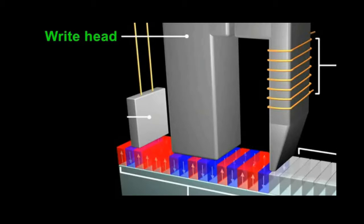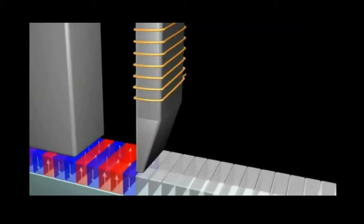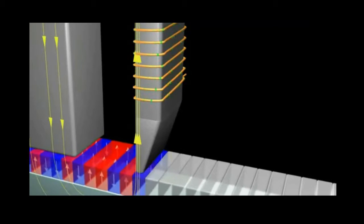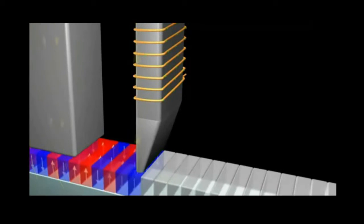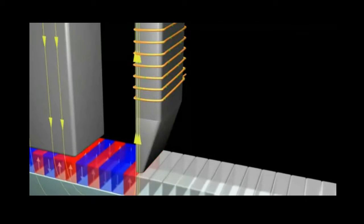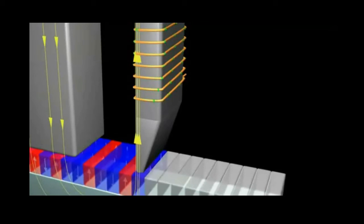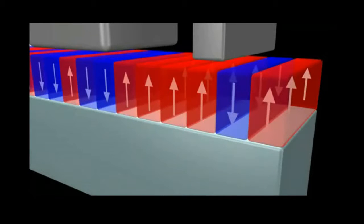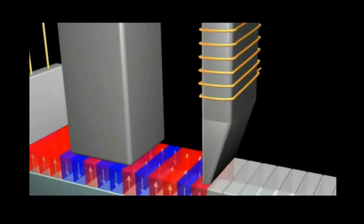The write head is basically an electromagnet with a core appropriately shaped to direct the magnetic field into a bit and magnetize it as it passes by. It can magnetize a bit as north facing up or north facing down simply by changing the direction of the current in the coil.